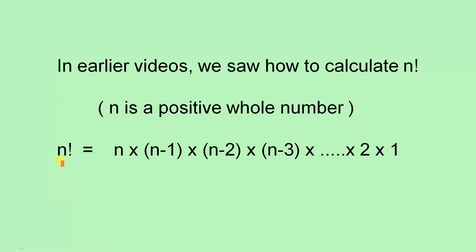So, if we have a particular value of n, to work out n factorial, we multiply n by the number immediately below it, by the next number below it, and we carry on till we multiply by 2 by 1. That's how we work out n factorial.